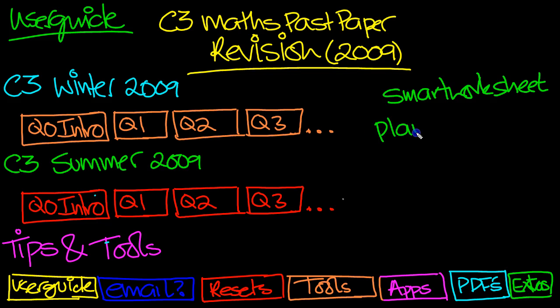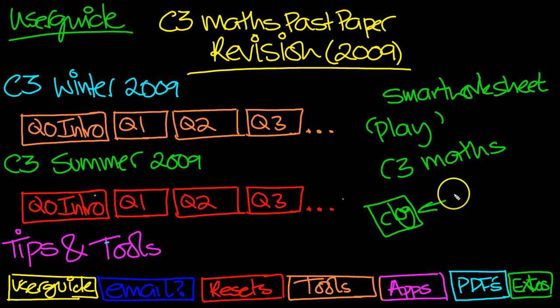So have a look out for it. All you need to do is type in C3 maths and it should pop up. When you type in any mathematical topic, look out for the dog icon. When you see a dog icon, it will probably be my icon that I use.